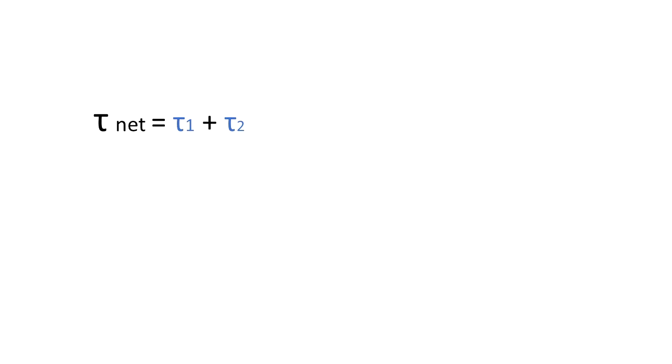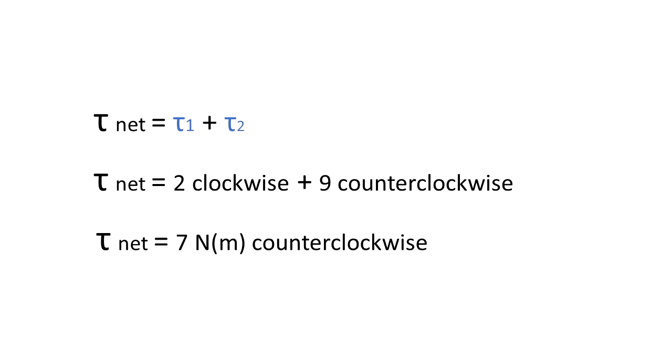We want to find the torque net. Then we have to do the superposition of both torques. Torque 1 is equal to 2 newton meters in the clockwise direction, plus torque 2, that's equal to 9 newton meters in the counter-clockwise direction. So you see that they are opposite, and we subtract them. So torque net is equal to 7 newton meters in the counter-clockwise direction.